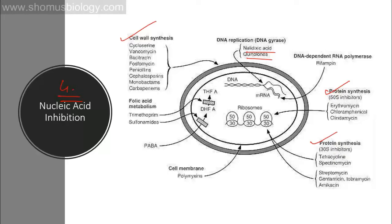DNA replication requires the topoisomerase enzyme DNA gyrase. Gyrase causes supercoiling and also reverses supercoiling so that the DNA gets relaxed during movement of the replication fork, allowing DNA replication to continue. Gyrase has two activities: cleaving the double-stranded DNA, and then re-sealing the nick. Quinolones destroy the ligase activity of gyrase, so gyrase can cleave the DNA but cannot re-ligate it — converting gyrase into an endonuclease that destroys DNA inside the cell.